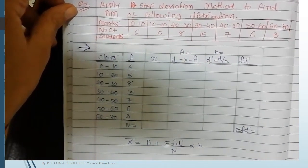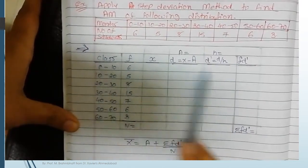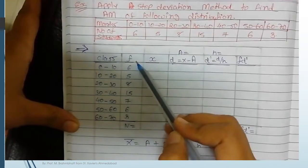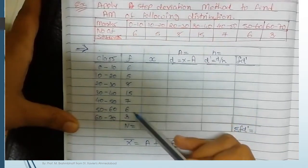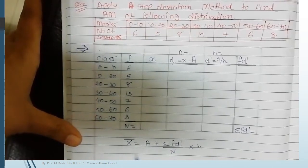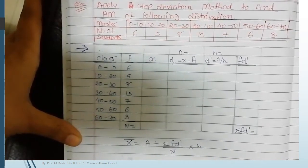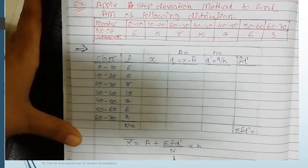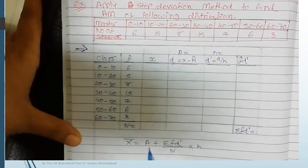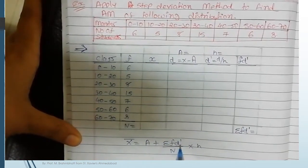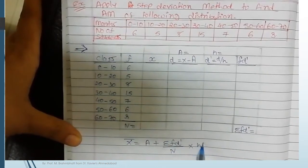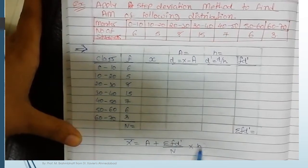First we prepare the table. The class intervals and frequencies already given in the question are written here. The formula for grouped frequency distribution is x-bar equals A plus sigma f·d-dash divided by capital N, multiplied by h. So we require A, sigma f·d-dash, capital N, and h. Let's find the values of each of these terms.